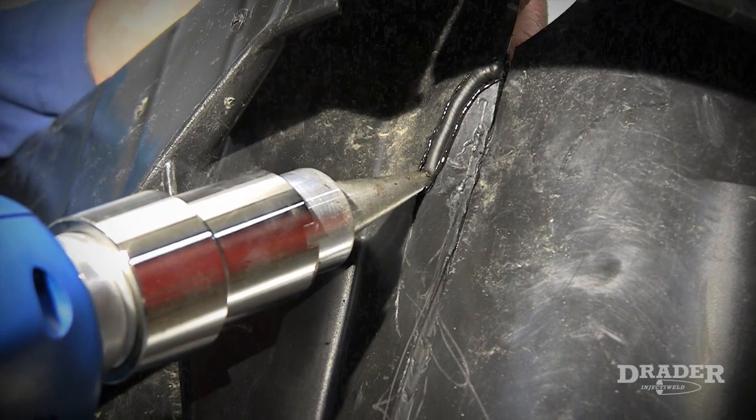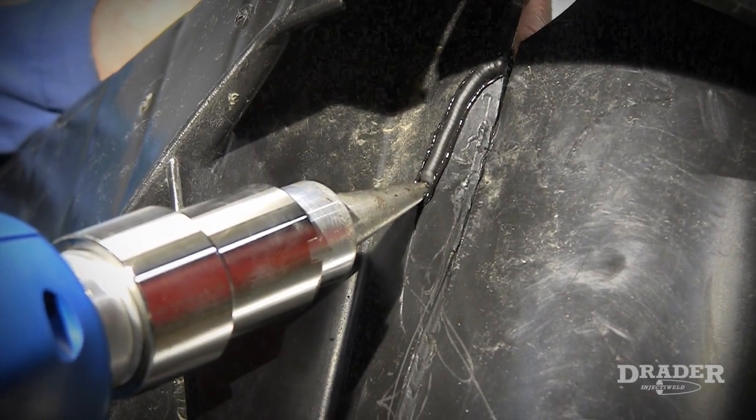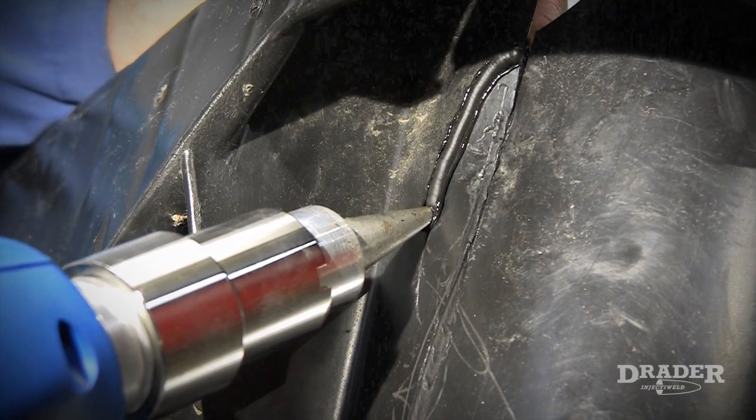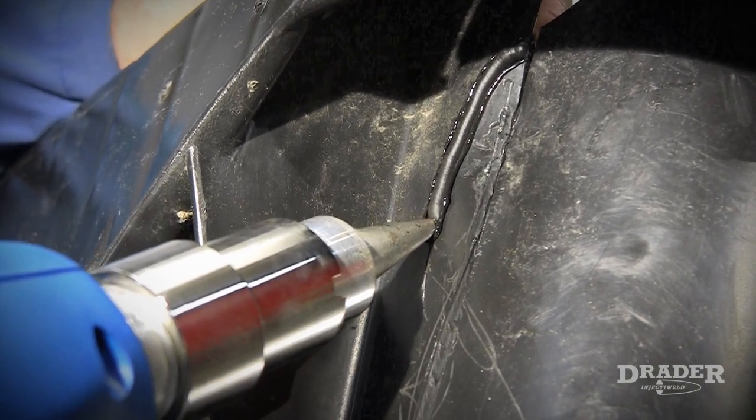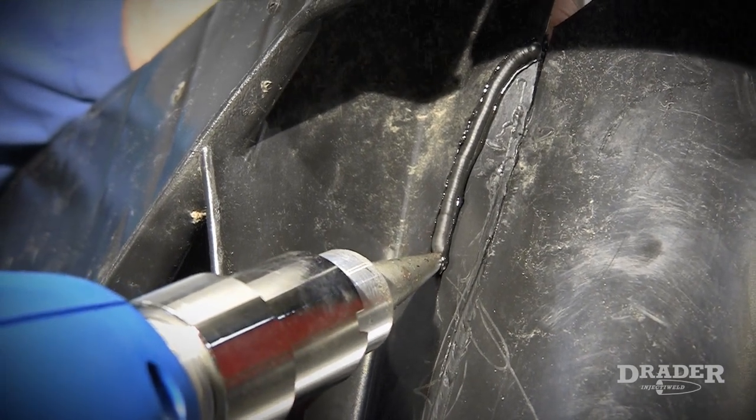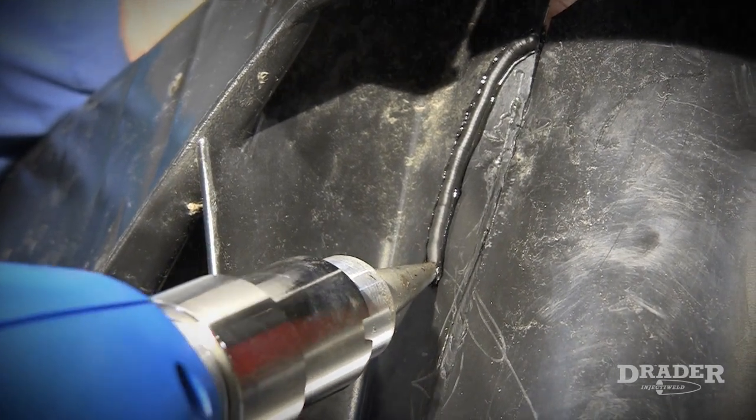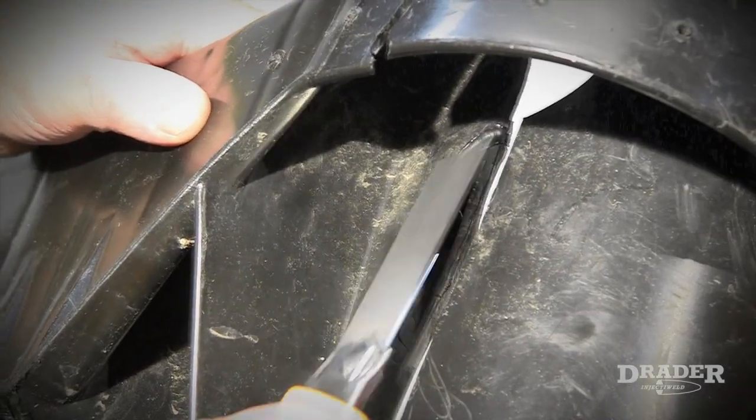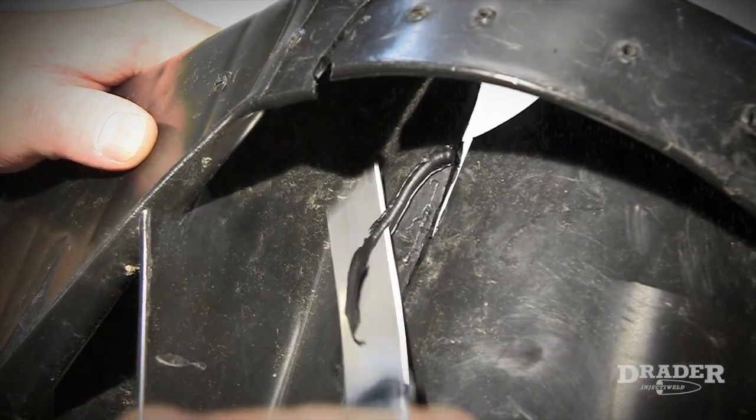It is easy to see the Injecta Weld's tip melt into the parent material. Melting plastic at the weld zone is essential to ensure a strong weld. I will use my knife on all front side welds just for appearance sake.